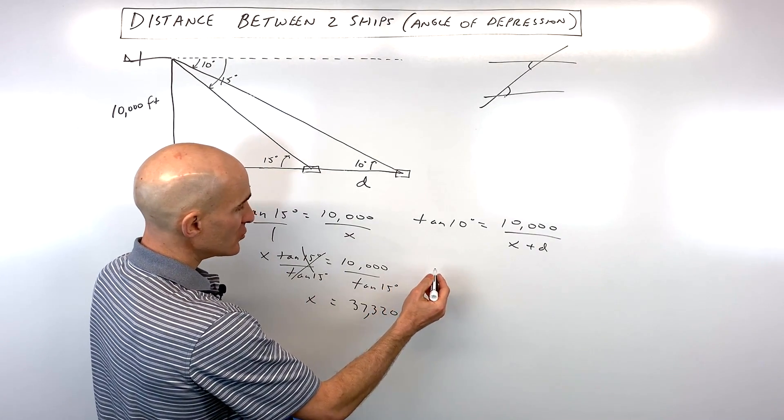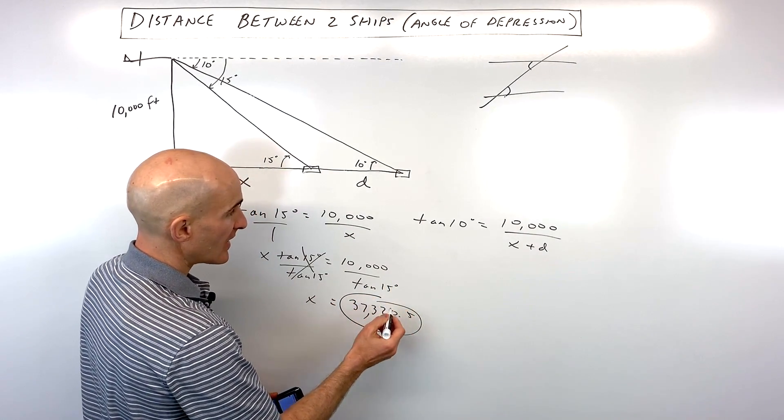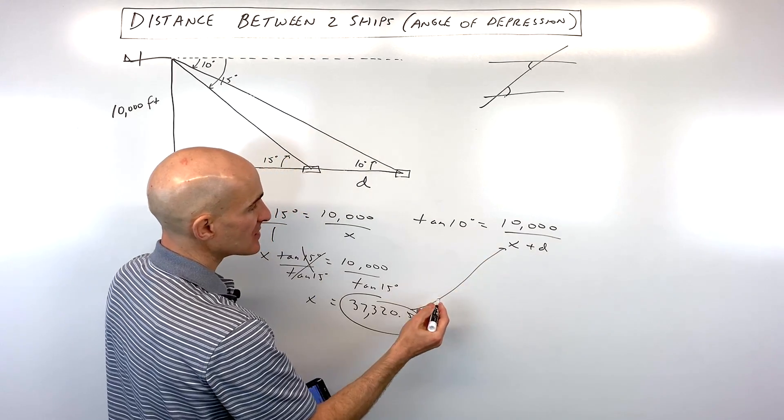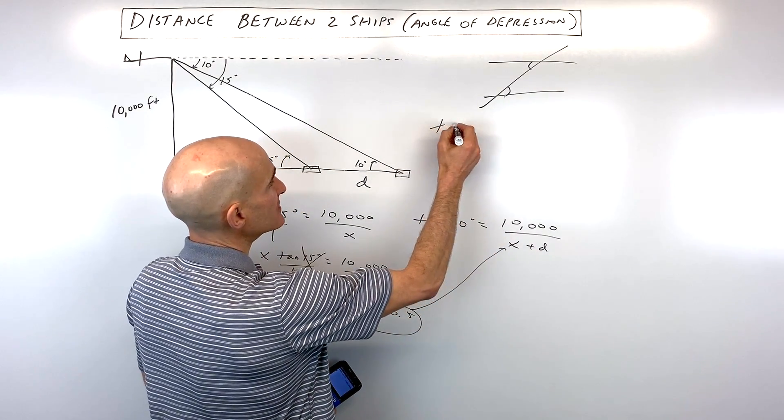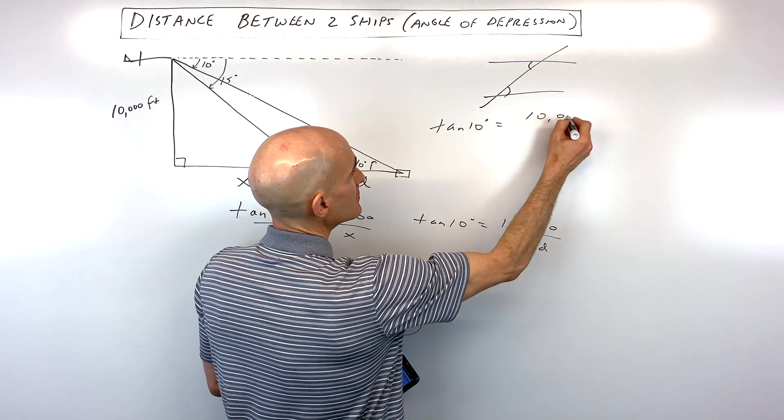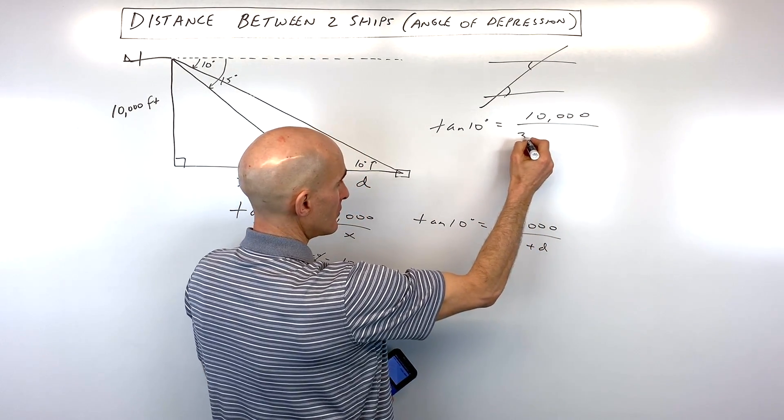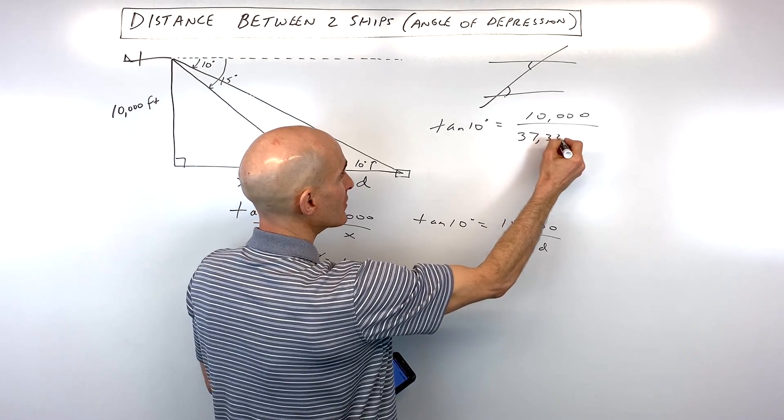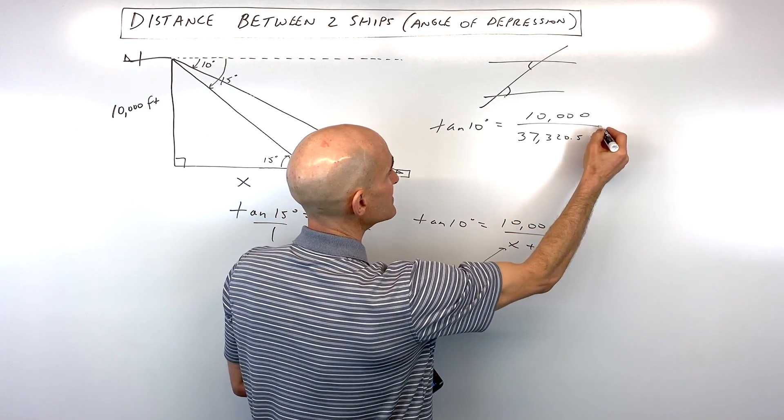Now over here, what we're going to do is we're going to take x, what x equals, and we're going to put it in place of x. So what we have now is we have the tangent of 10 degrees equals 10,000 over 37320.5 plus d.